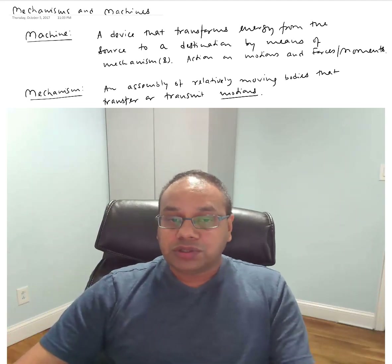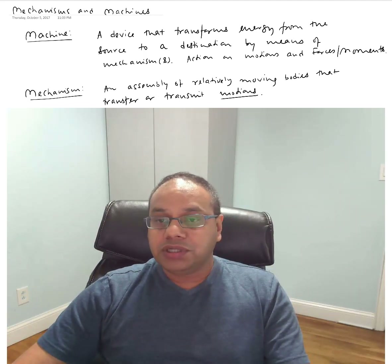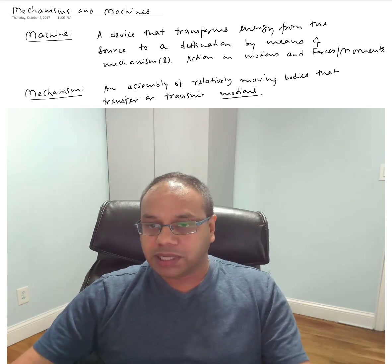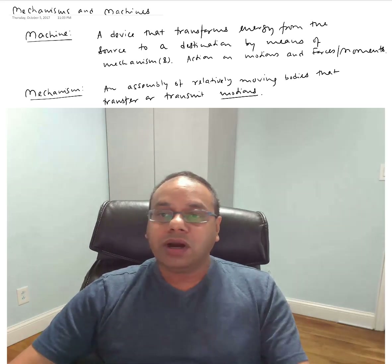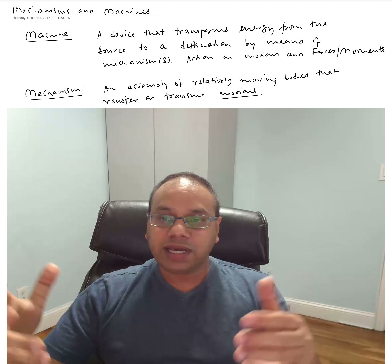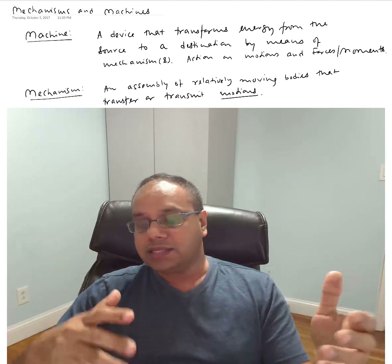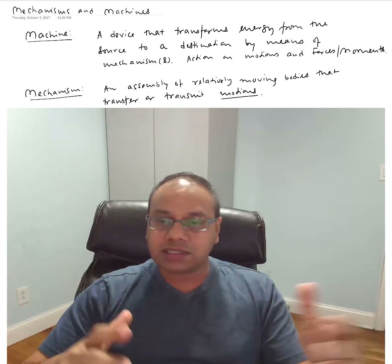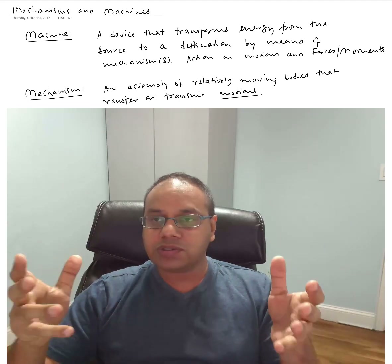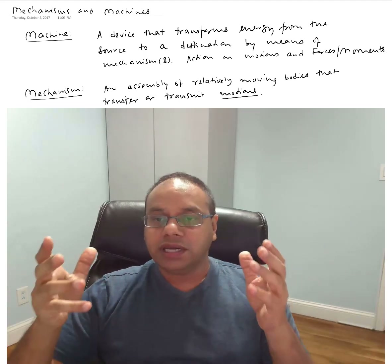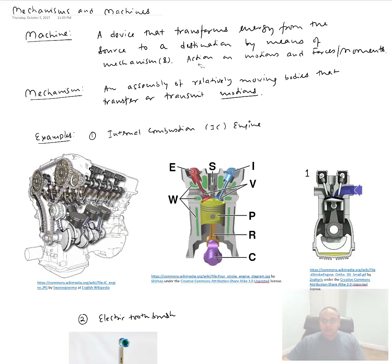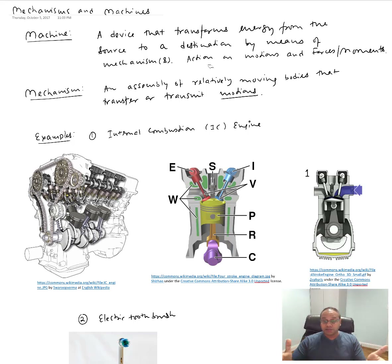Now let's talk about the machine. A good example of a machine is something very familiar — an automobile or car. A car itself is a very complex machine: it has an internal combustion engine, an air conditioning system, a heating system, and many other things. Let's just focus on the internal combustion engine. The internal combustion engine itself is a machine which contains lots of different mechanisms.